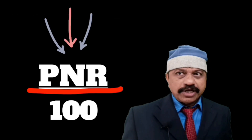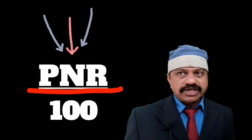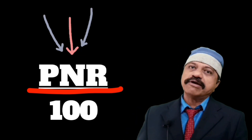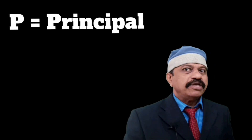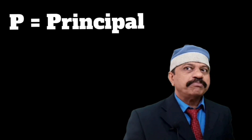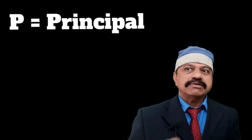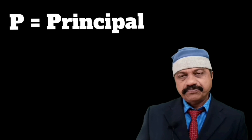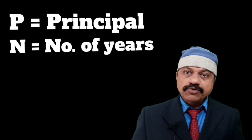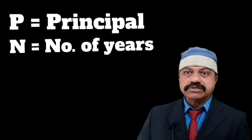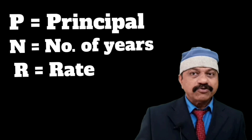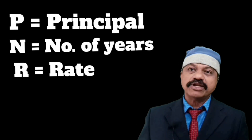The formula for the calculation of interest is PNR divided by 100. Here P stands for principal, i.e., the amount of the debt. N stands for number of years and R stands for the rate of interest.